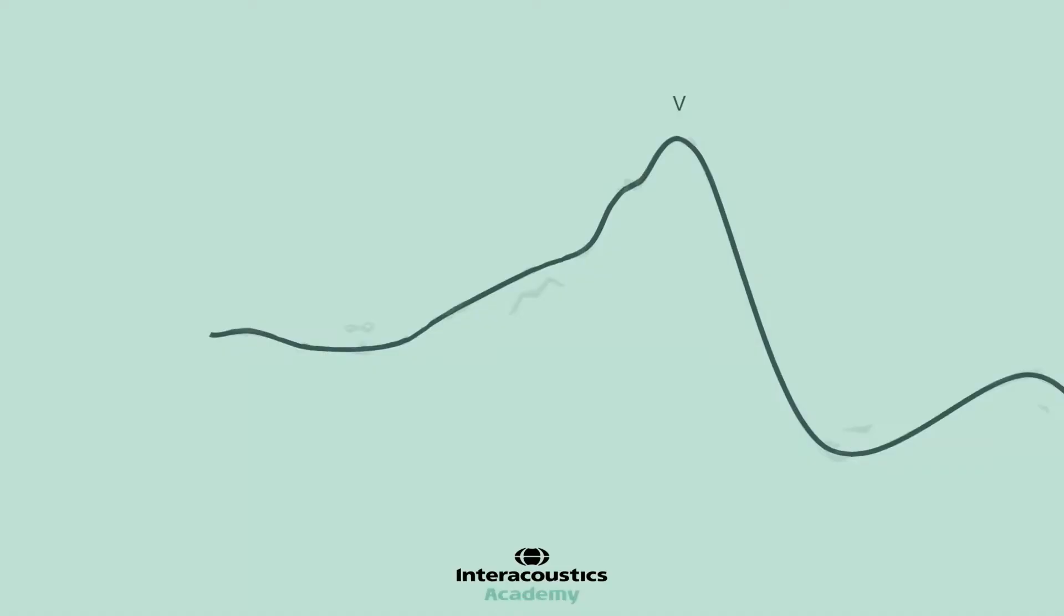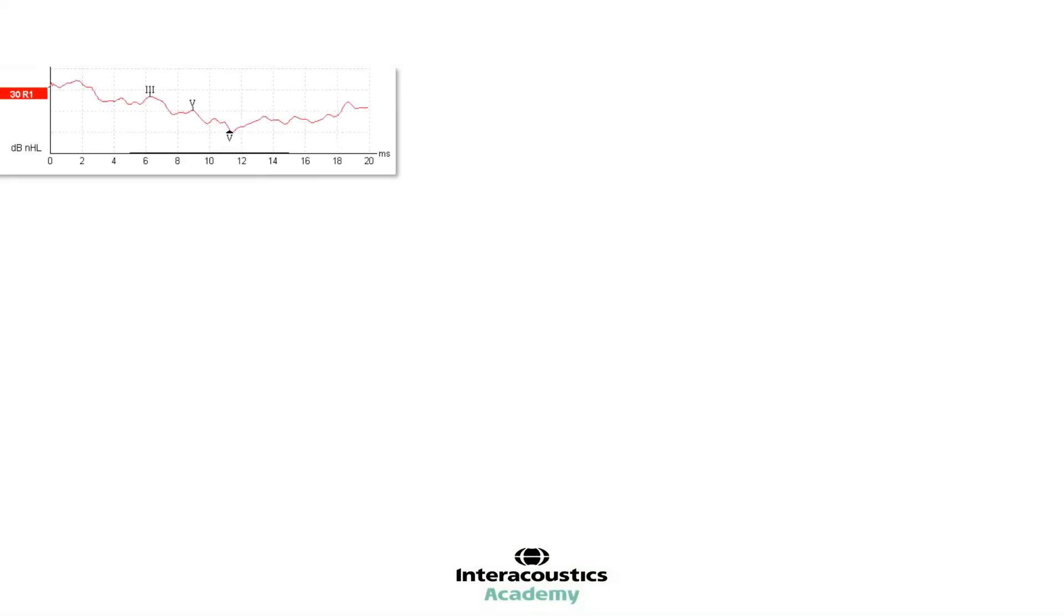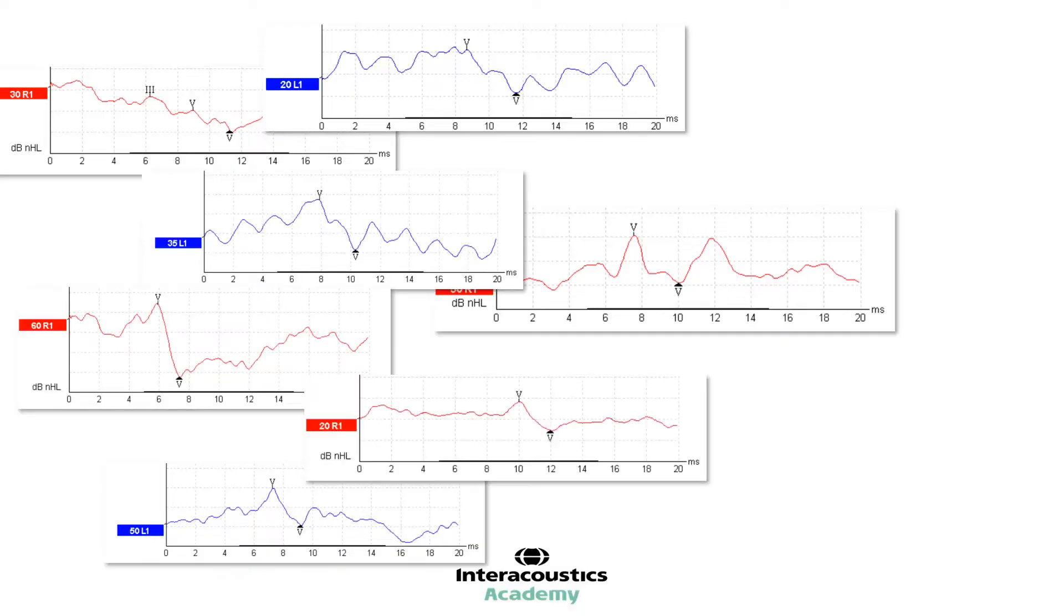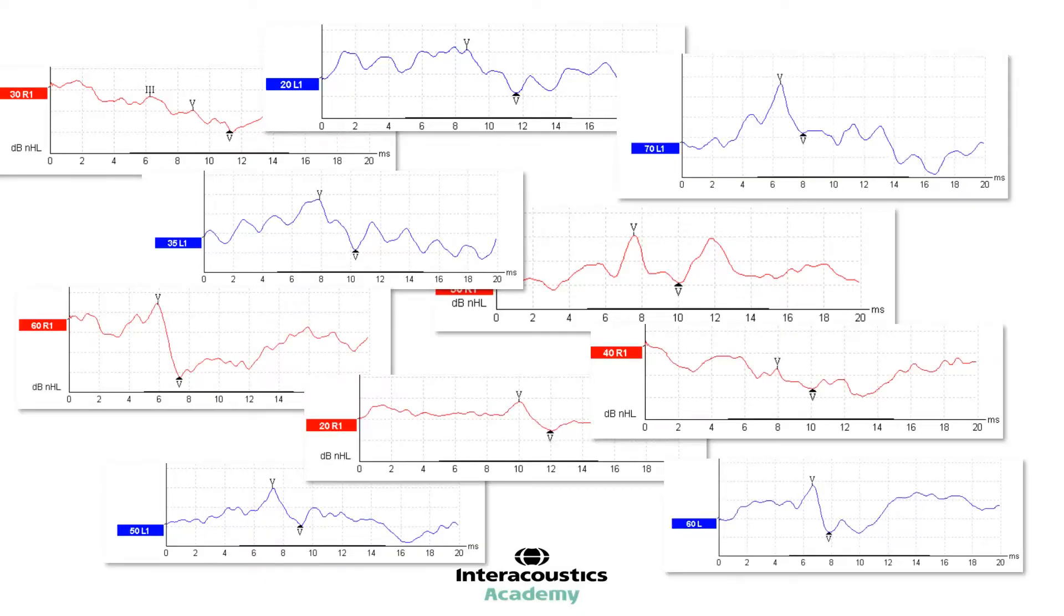Depending on stimulus type, frequency, intensity level, degree and type of hearing loss, many different ABR morphologies can be recorded, and this can make waveform interpretation challenging for new or inexperienced testers.